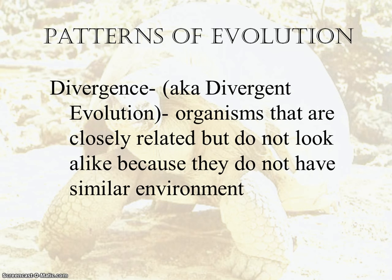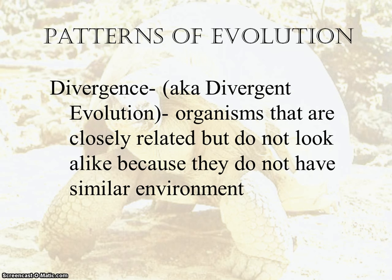The first one we want to look at is divergent evolution. You can have organisms that are very closely related — different species that are very closely related — however, they don't look alike because the environment that they grew up in caused them to physically change, caused certain genes to show up in their phenotype. That's why they don't look the same, even though they are very similarly related genetically.